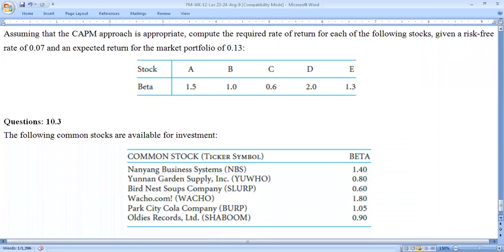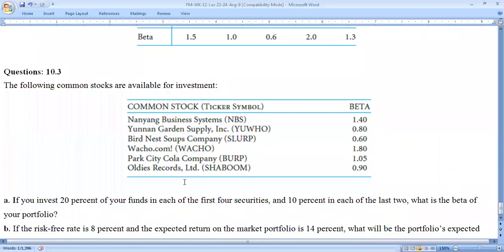Question 10.3: Different stocks in the company and their data are given. If you invest 20% of your funds in each of the first four securities - 1, 2, 3, 4 - that's 20% each, and then 10% in each of the last two. So what is the beta of your portfolio?